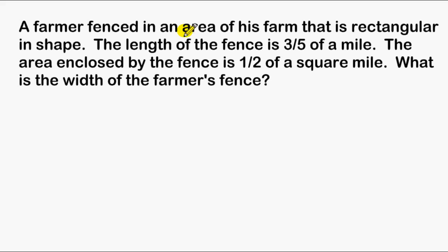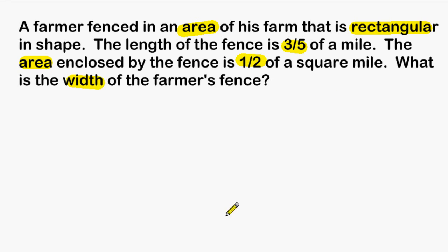A farmer fenced in an area of his farm that is rectangular in shape. The length of the fence is three-fifths of a mile. The area enclosed by the fence is one-half of a square mile. What is the width of the farmer's fence?